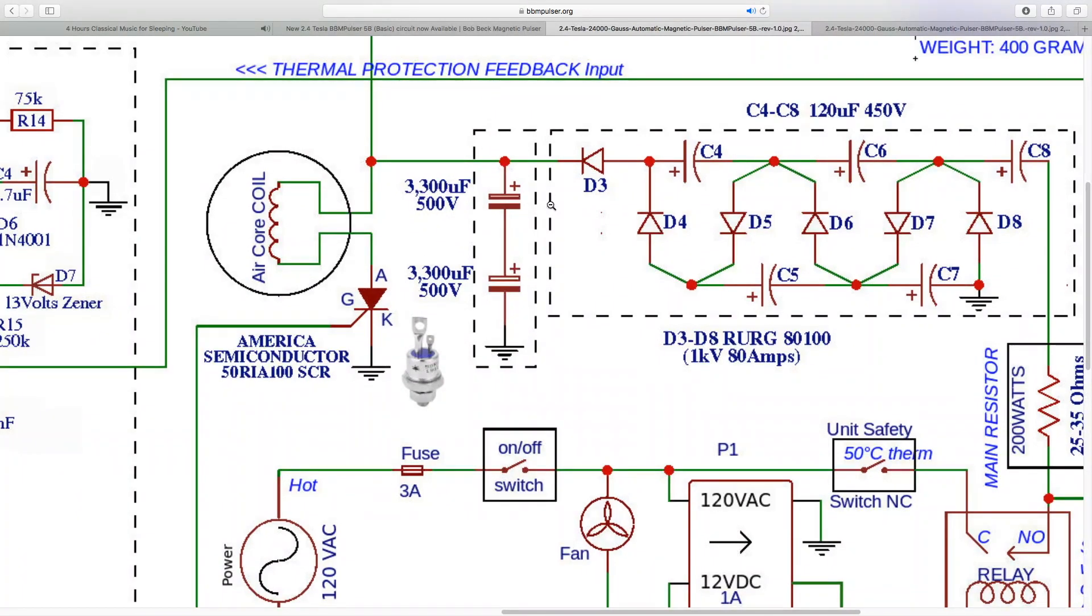We talked about the new capacitor bank that has newer, larger capacitors - 3,300 microfarad and they must be 500 volt. Previous capacitors were 350 volts. In this circuit you have to use 500 volt capacitors and connect them in series.